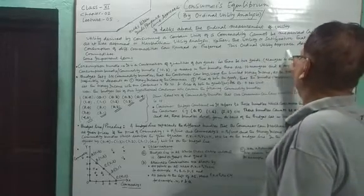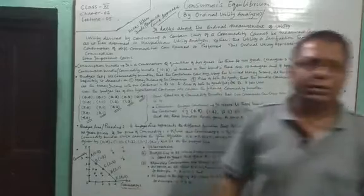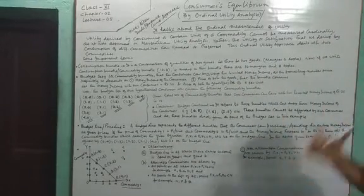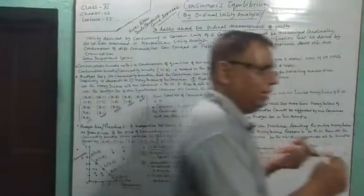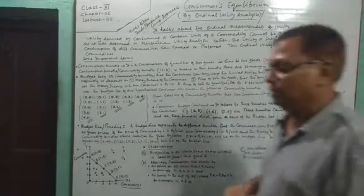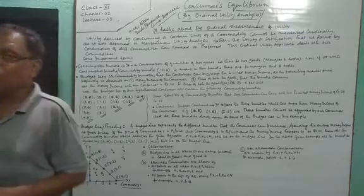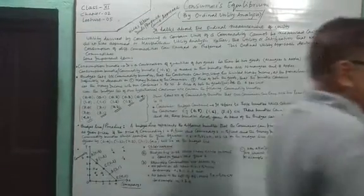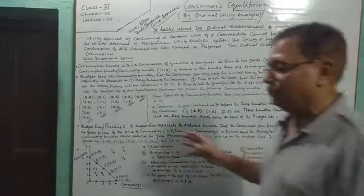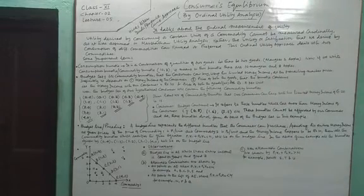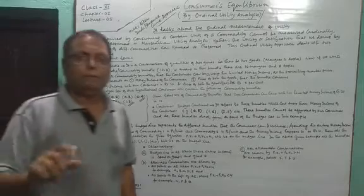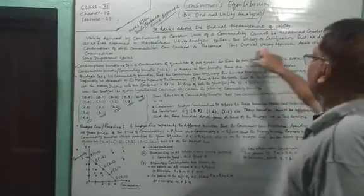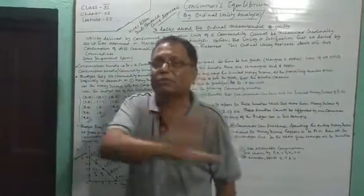This ordinal utility approach deals with two commodities always — it will never work with one commodity. In cardinal utility analysis, we learned consumer equilibrium for one commodity and then two commodities, known as the law of equimarginal utility, where MU1/P1 equals MU2/P2. But the ordinal utility approach always deals with two commodities.